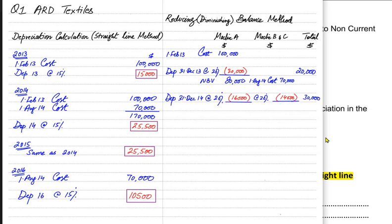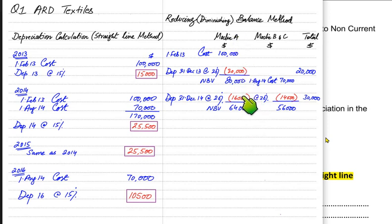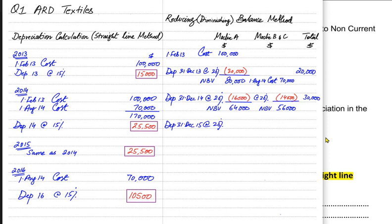After deducting 2014 depreciation, Machine A's updated NBV is 64,000, and Machines B and C have an NBV of 56,000. In 2015, no machines were bought or sold. We apply 20% to the up-to-date NBVs: 20% of 64,000 gives 12,800 for Machine A, and 20% of 56,000 gives 11,200 for Machines B and C.